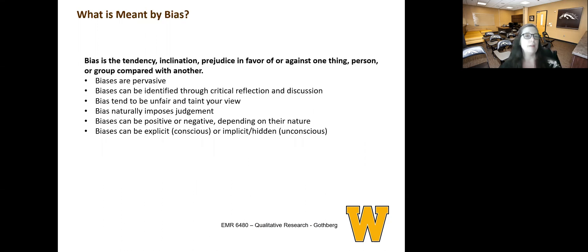What's meant by bias? Bias is the tendency, that inclination, the prejudice, in favor of or against a thing, a person, a group compared to another one. They are pervasive. They can only be identified through critical reflection and discussion. Biases tend to be unfair and taint your view. Biases naturally impose judgment. They can be positive or negative, depending on their nature. They can be explicit, meaning they can be conscious, or they can be implicit, meaning they are unconscious.